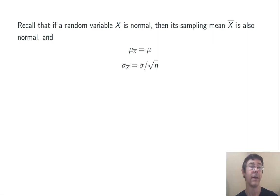All right, we need some information about sample means and sample standard deviations. If we have a random variable X that has a normal distribution, then the sampling mean X bar is also going to be normal. And the mean of that sample mean is going to be the same as the mean of the distribution, mu.